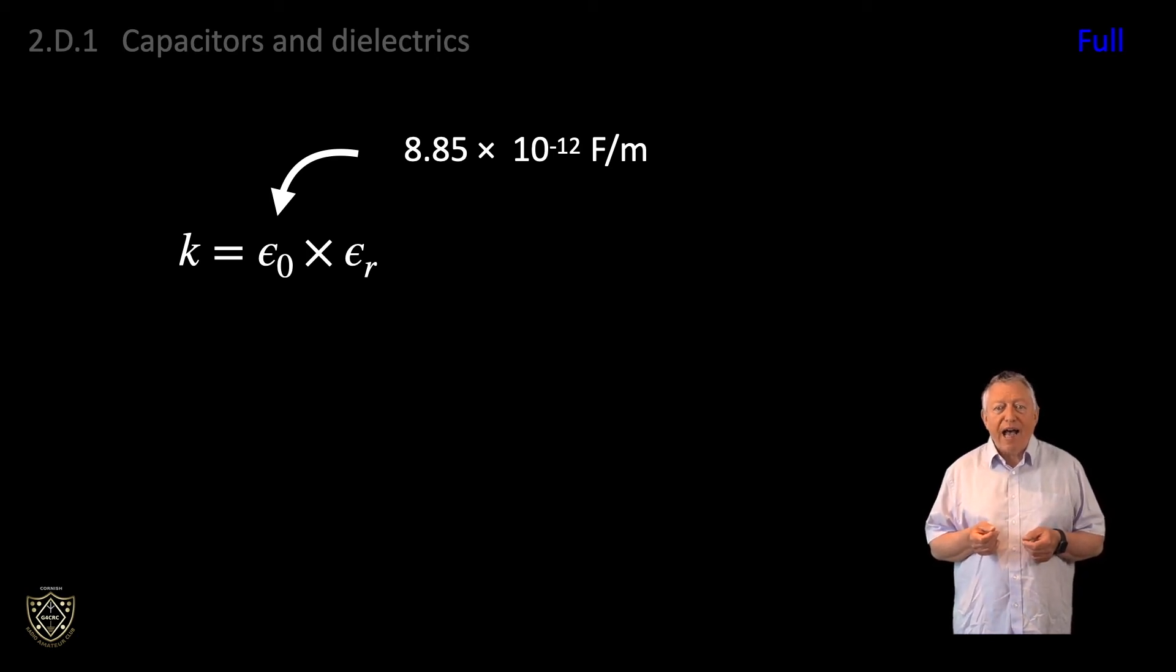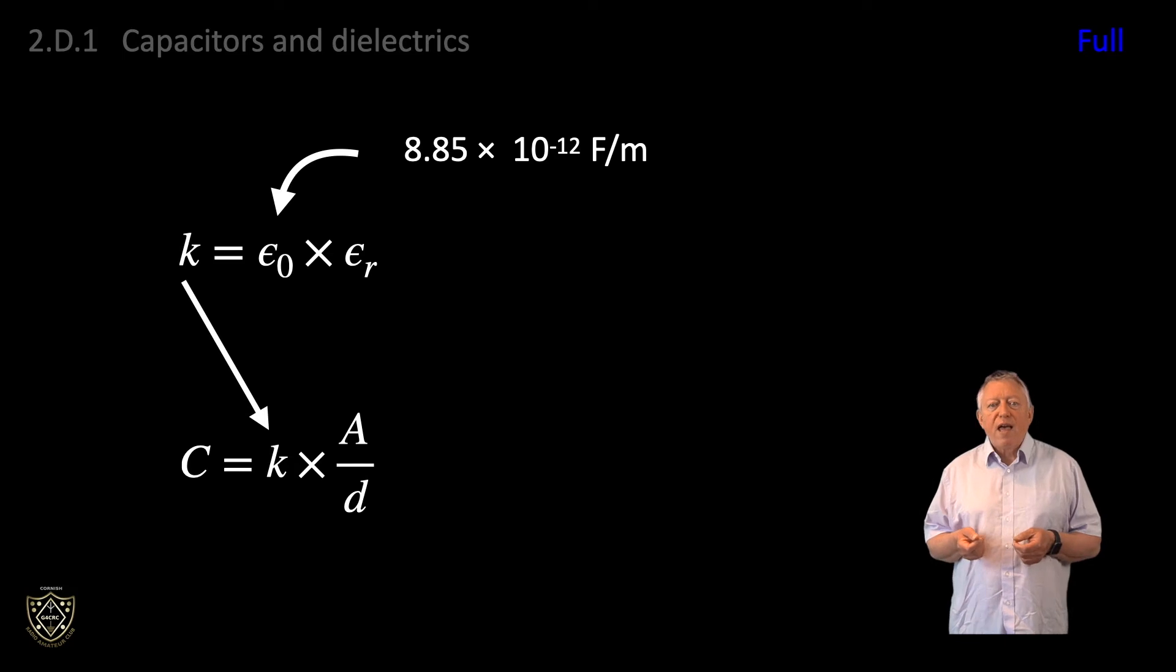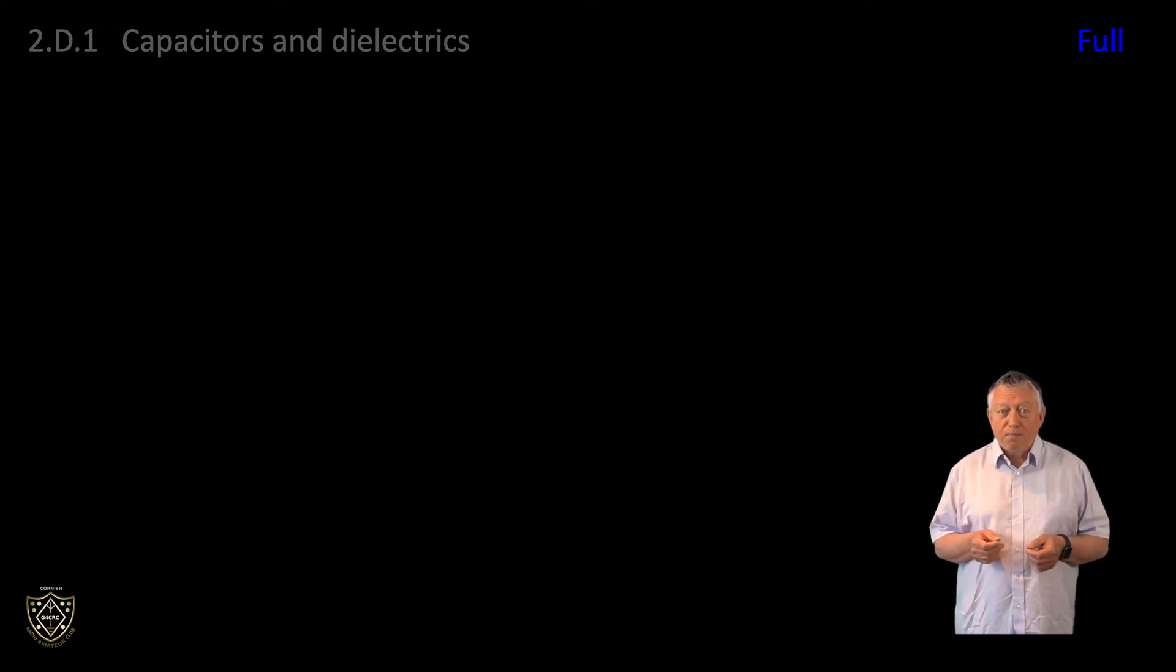We can write this mathematically as k equals epsilon 0 times epsilon r. And we can use this absolute permittivity, denoted as k, to calculate the capacitance of a physical capacitor using the formula shown, which is in EX309. If you are performing calculations, remember that the fundamental units, meters and meters squared, must be used.